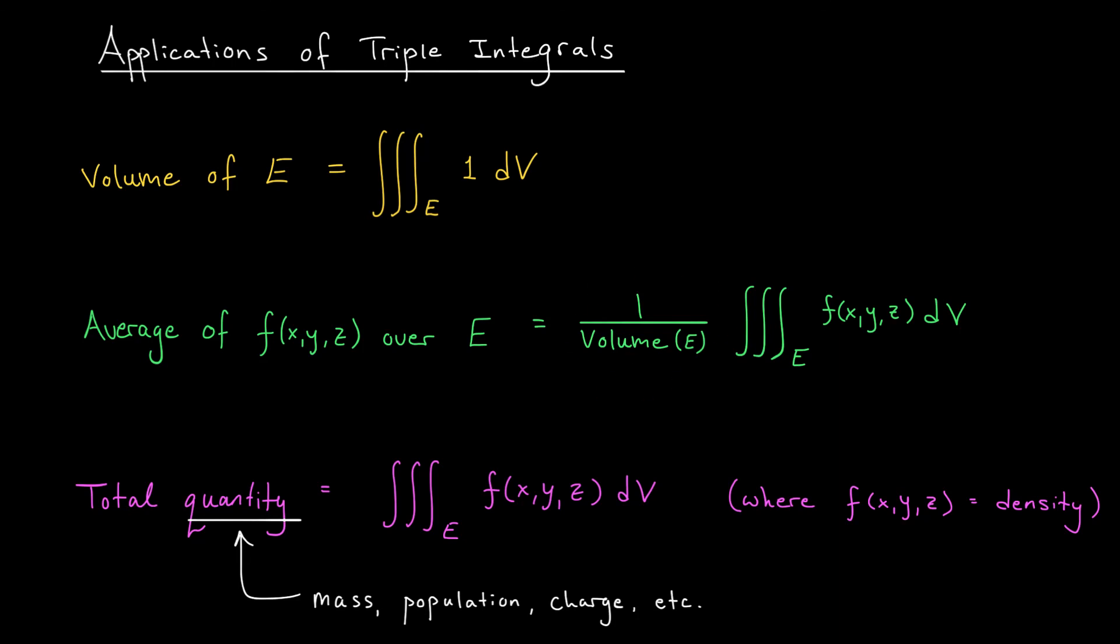Finally, for double integrals, if you have some function F that represents a density, mass density, population density, whatever, the double integral of that function gives you back the total amount of that quantity throughout your 2d region. Well, the exact same thing is going to be true for triple integrals. If F of X, Y, Z represents some sort of a density function, mass density, population density, charge density, you name it, then the triple integral over our 3d region E of the function F dV is going to represent the total amount of that quantity throughout our 3d region.